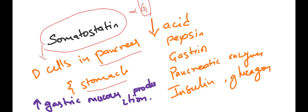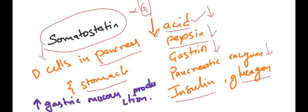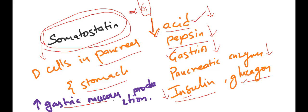Somatostatin decreases acid secretion, pepsin secretion, gastrin hormone secretion, and pancreatic enzyme secretion. It also decreases insulin and glucagon. The only thing somatostatin increases is gastric mucus production — there will be increased production of mucus from the stomach cells through somatostatin.